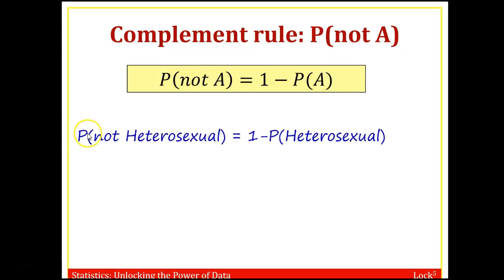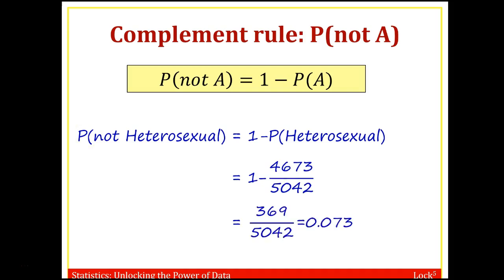This is video number three, looking at section 2.1, the first probability section. This is what we finished with in the last video, looking at the complement rule. The complement rule: the probability that event A does not happen is just the same as taking one minus the probability that event A does occur.